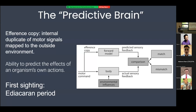An efference copy is basically an internal duplicate of motor signals of your own actions mapped to the outside environment. It allows you to say, when swimming in water, if the water moves — was it something swimming past me, or was it me? This is really the first time in evolutionary history, during the Ediacaran period before the Cambrian explosion, when organisms had the ability to predict their own actions.